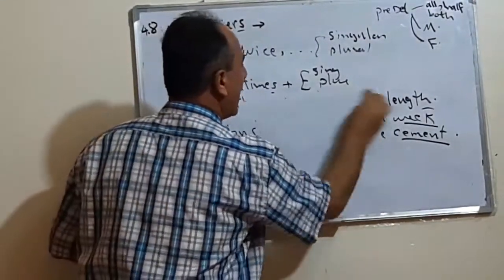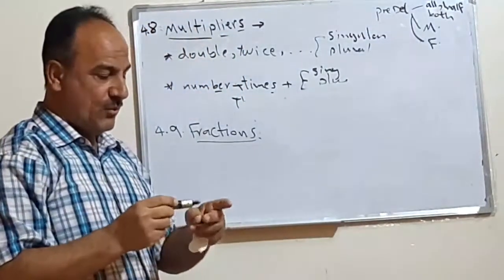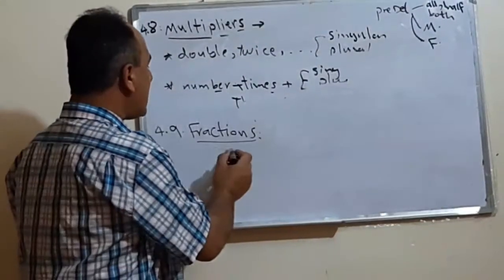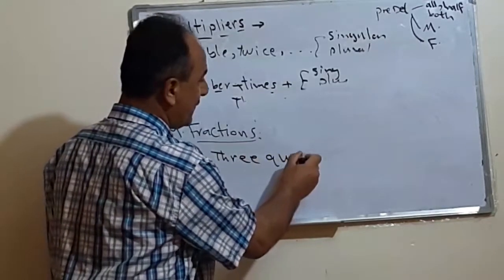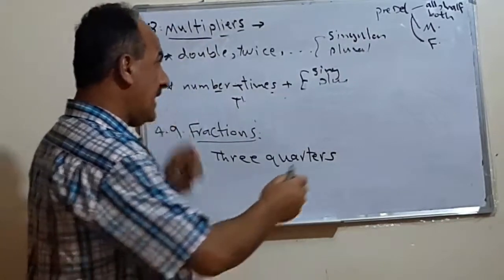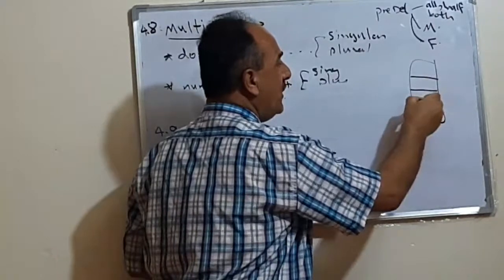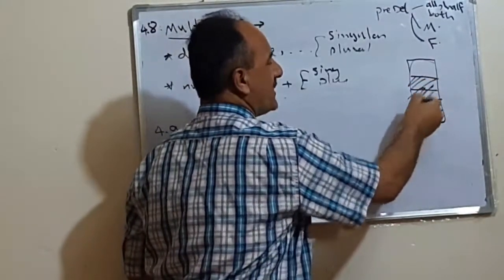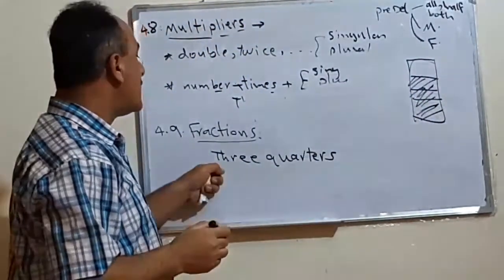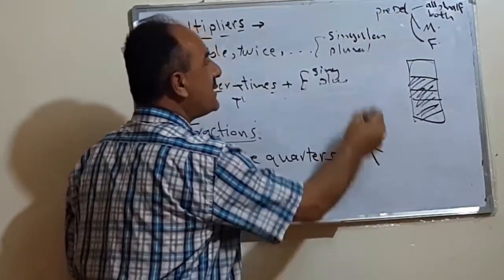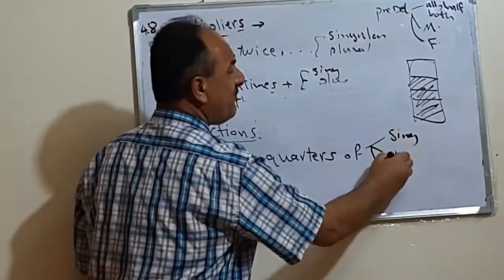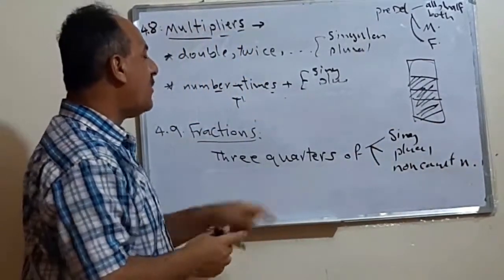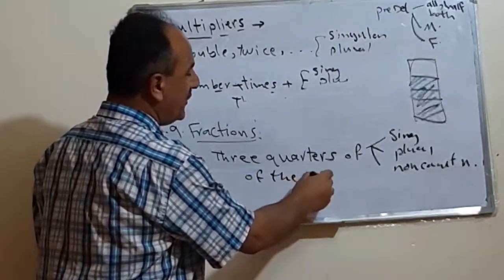The third type of multipliers is what we call fractions. What is meant by fractions? In mathematics, fractions divide a whole into parts. For example, 'three quarters' — if we divide something into four equal parts, three quarters refers to three of those four parts. After fractions, the same rule applies: it is possible to have a singular noun, a plural noun, or a non-count noun.